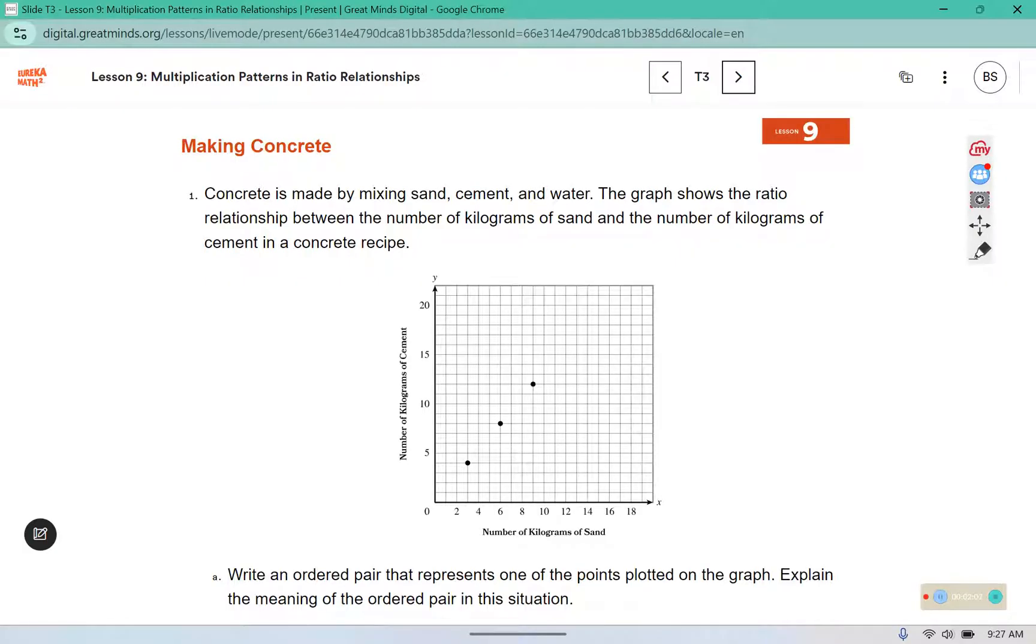This is the first thing that you will need to do in your workbook. It says, concrete is made by mixing sand, cement, and water. The graph shows the ratio relationship between the number of kilograms of sand and the number of kilograms of cement in a concrete recipe.